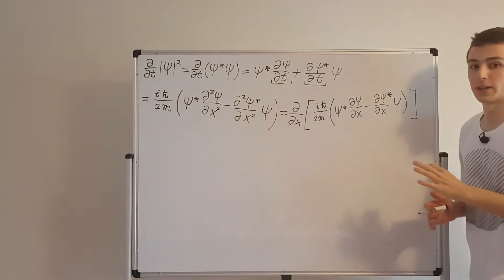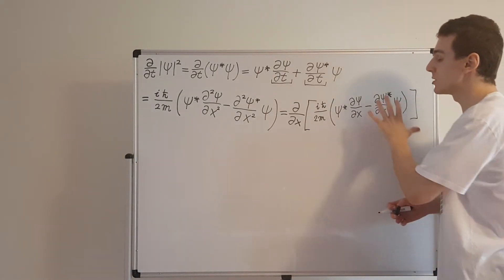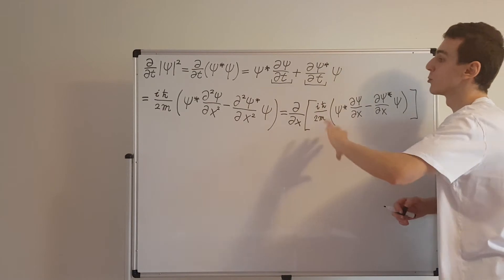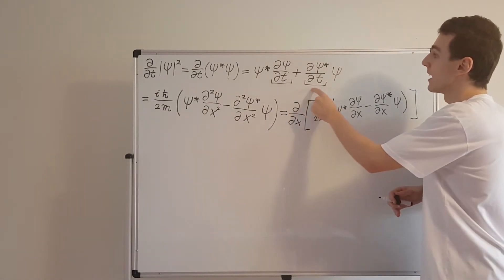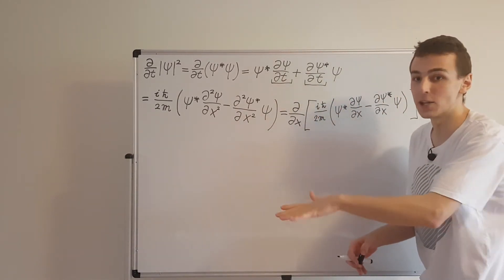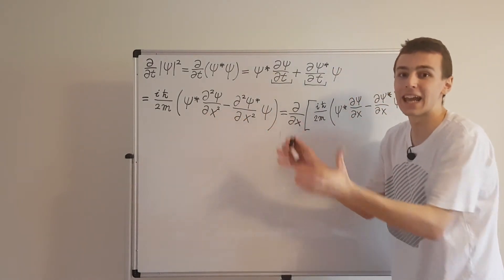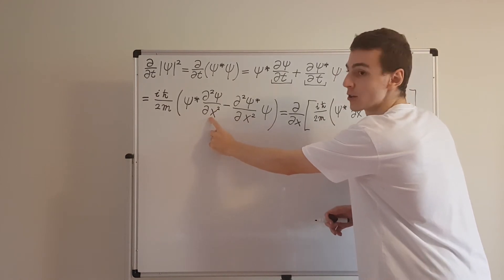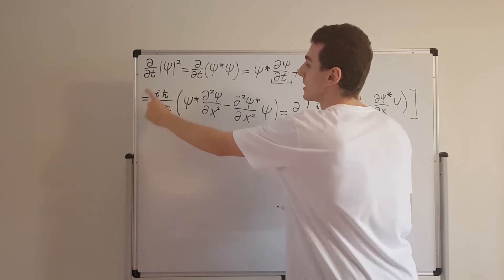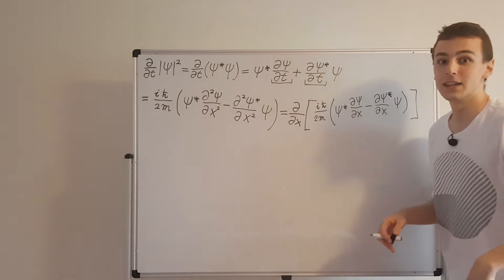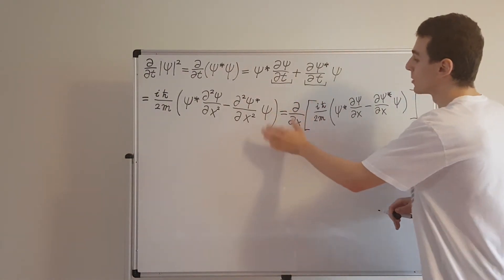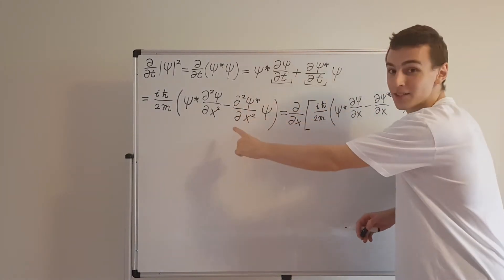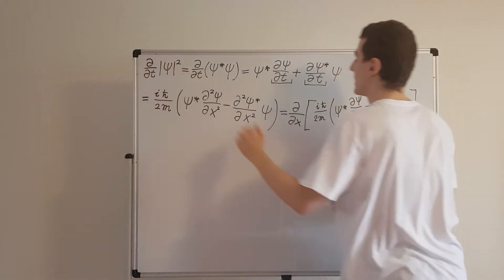So this is the expression we need to prove that normalization is preserved. To summarize: we started with the definition, used the product rule for differentiation, substituted a rearranged version of the Schrödinger equation and its complex conjugate, cancelled terms involving the potential, and were left with terms from the kinetic energy term. That explains the second-order partial derivatives with respect to x and the constant i h-bar over 2m. We pulled out the derivative using the product rule in reverse.